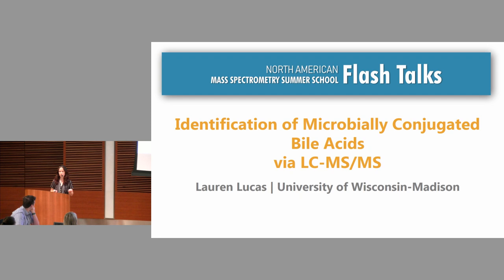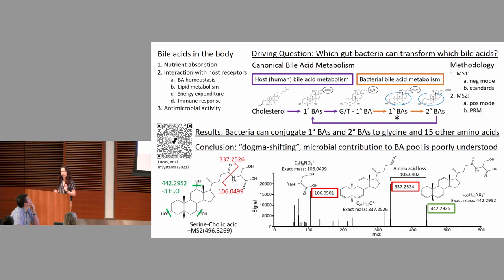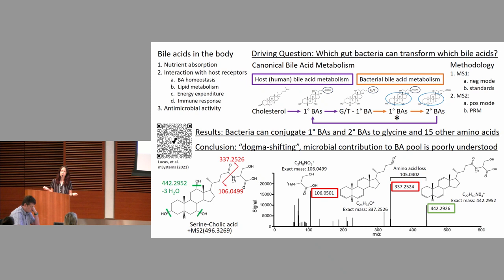I'm super excited to tell you a little bit about this paper I published about microbially conjugated bile acids. So what do bile acids do? Bile acids are a major component of bile that's stored in the gallbladder and released after a meal, and it aids in lipid and fat absorption from your diet. But bile acids also get absorbed through the intestine, circulate throughout the body, and interact with different hormone receptors, changing host physiology.